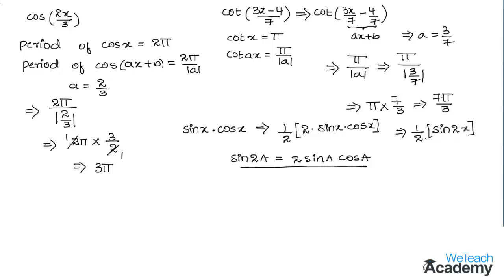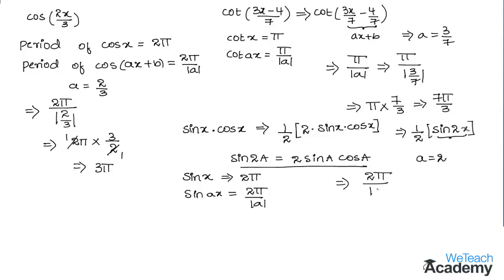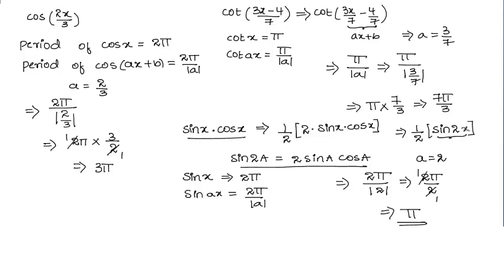We know that the period of sin x is 2π and the period of sin(ax) is 2π divided by |a|. Comparing sin(ax) with sin(2x), we get a equal to 2. Therefore, the period is 2π divided by |2|, which equals 2π/2 = π. So the period of sin x multiplied by cos x is π.